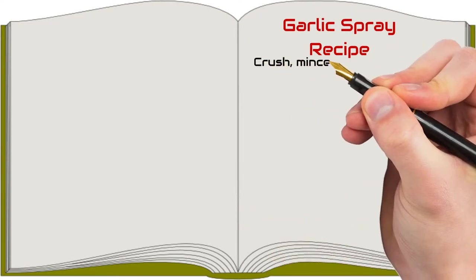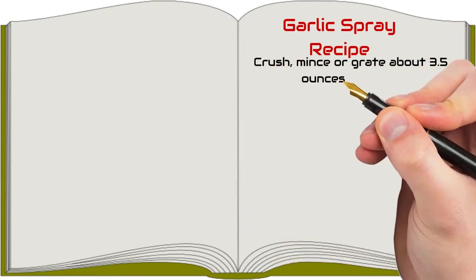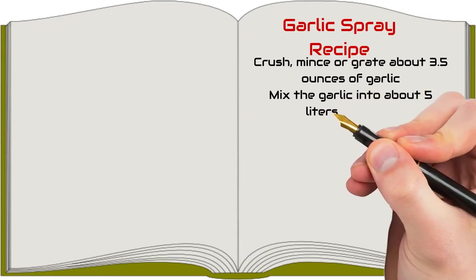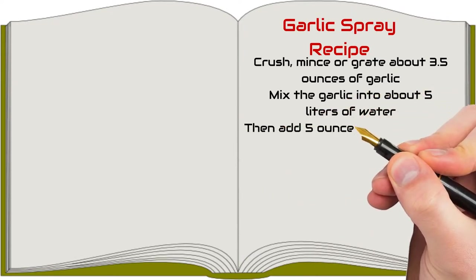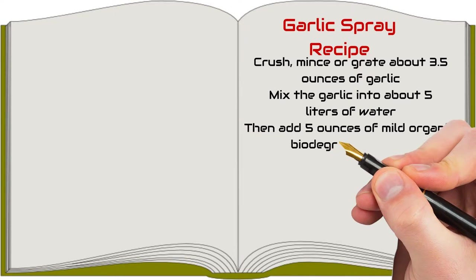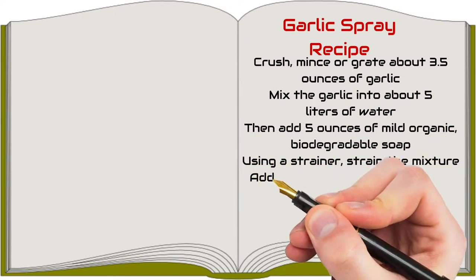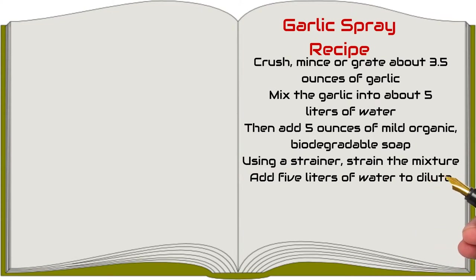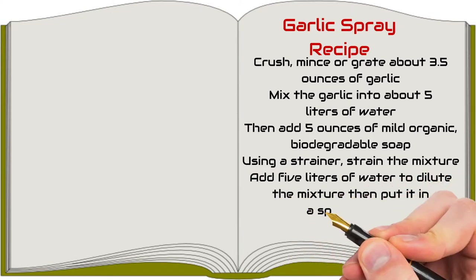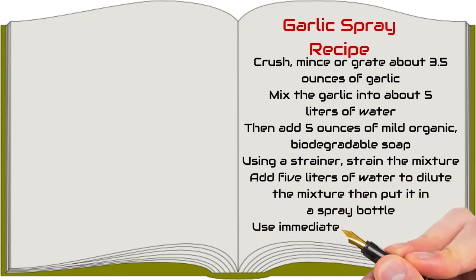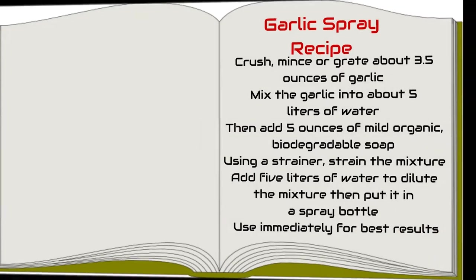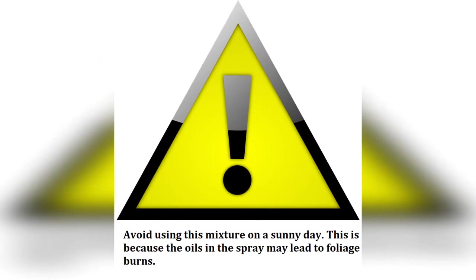Crush, mince, or grate about 3.5 ounces of garlic. Mix the garlic into about five liters of water, then add five ounces of mild organic biodegradable soap. Using a strainer, strain the mixture. Add five liters of water to dilute the mixture, then put it in a spray bottle. Use immediately for best results. However, you should avoid using this mixture on a sunny day. This is because the oils in the spray may lead to foliage burns.